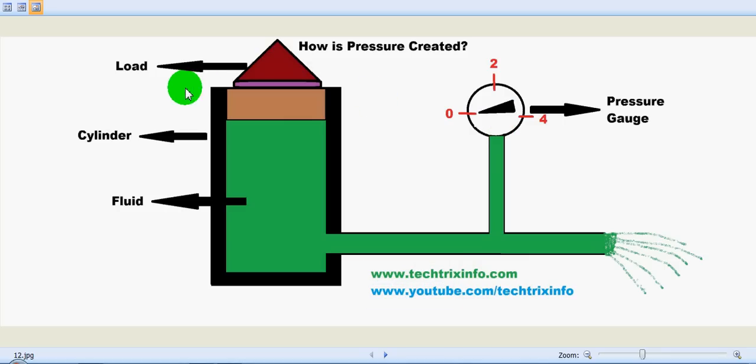On the top of the cylinder, we have a piston with a definite amount of load on top. The cylinder is filled with fluid, maybe hydraulic oil or something. So let's see how it happens.